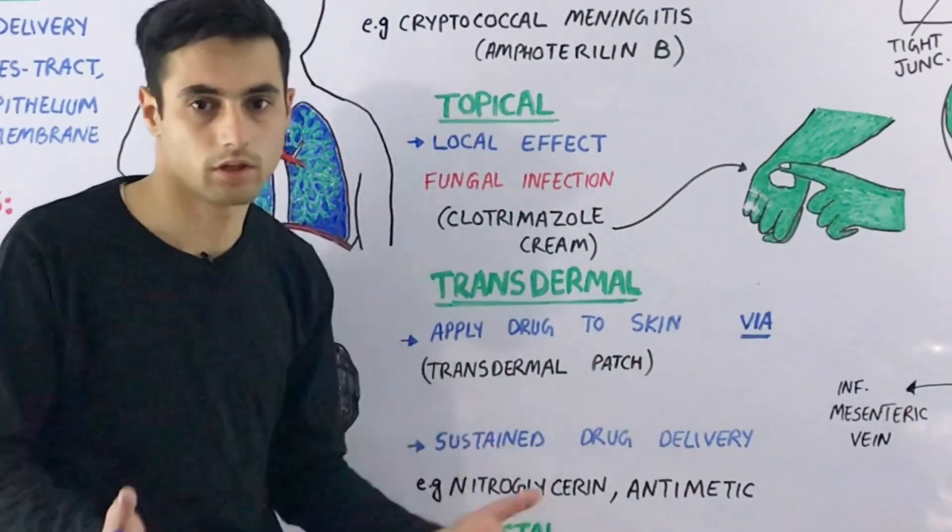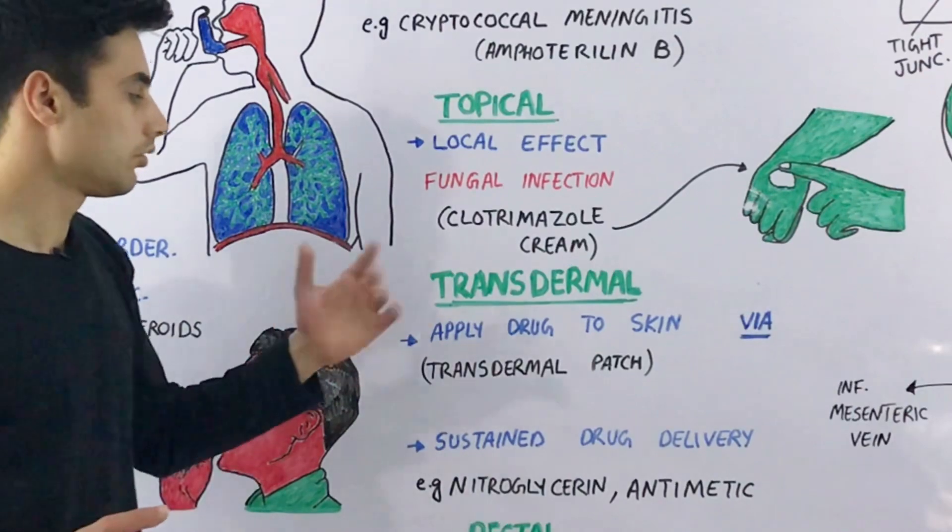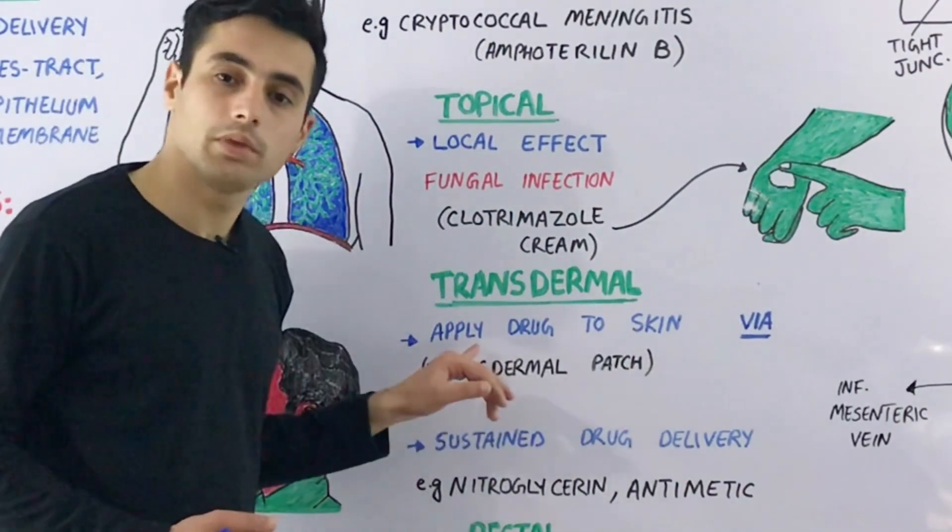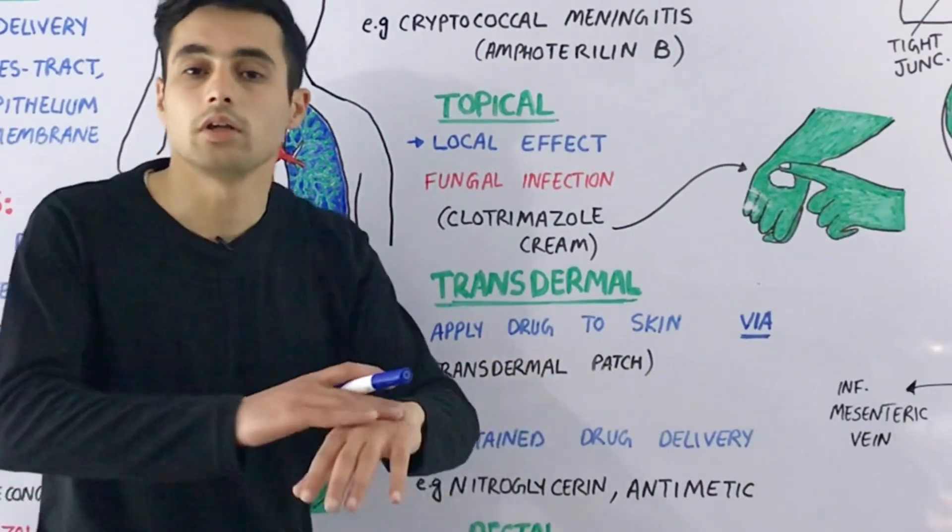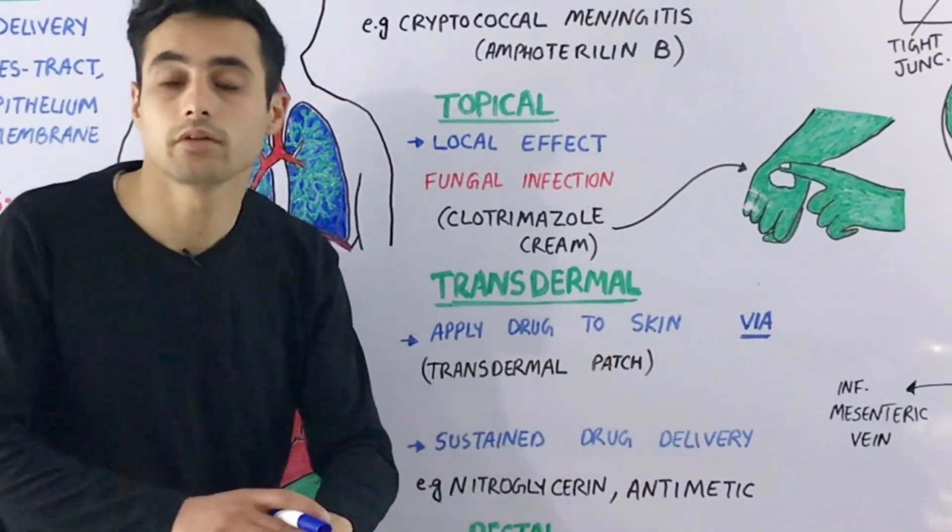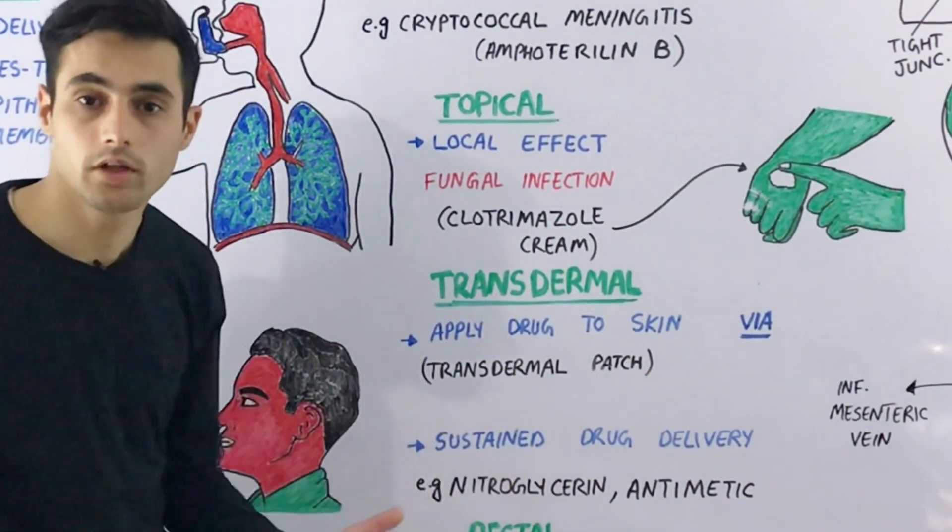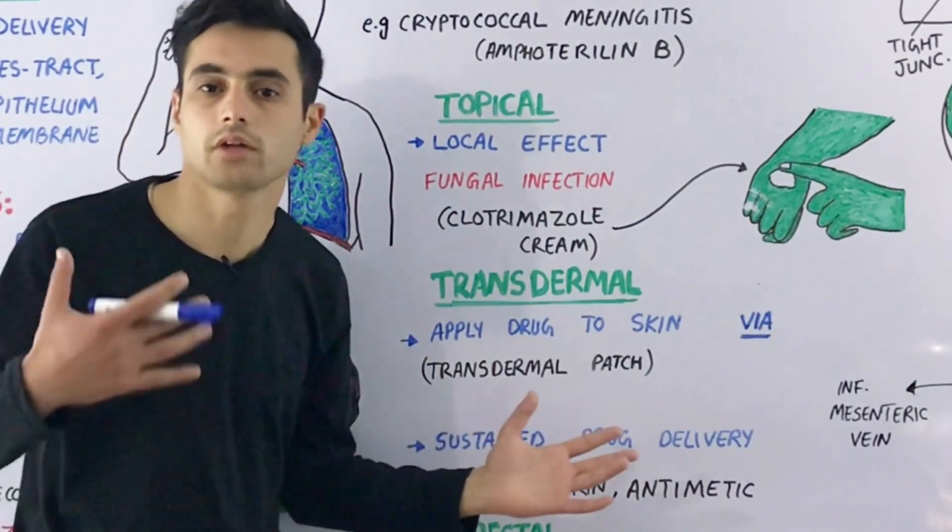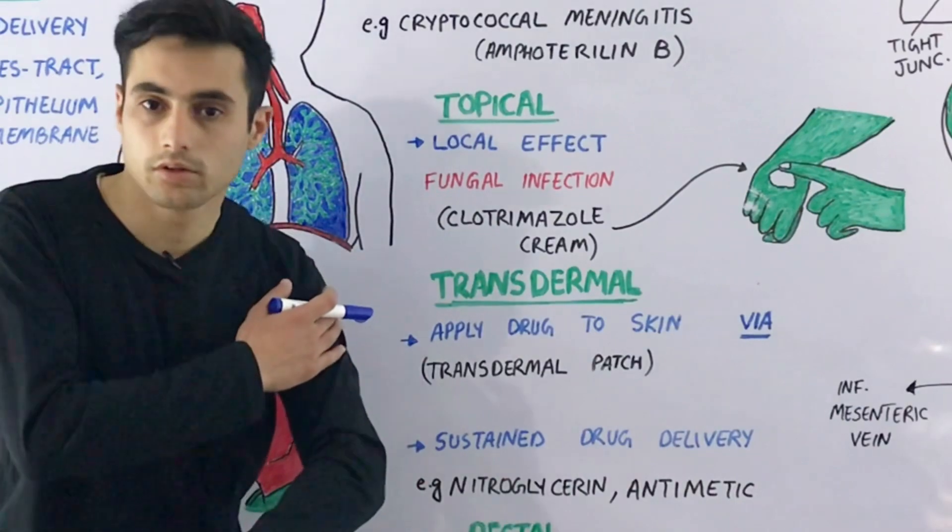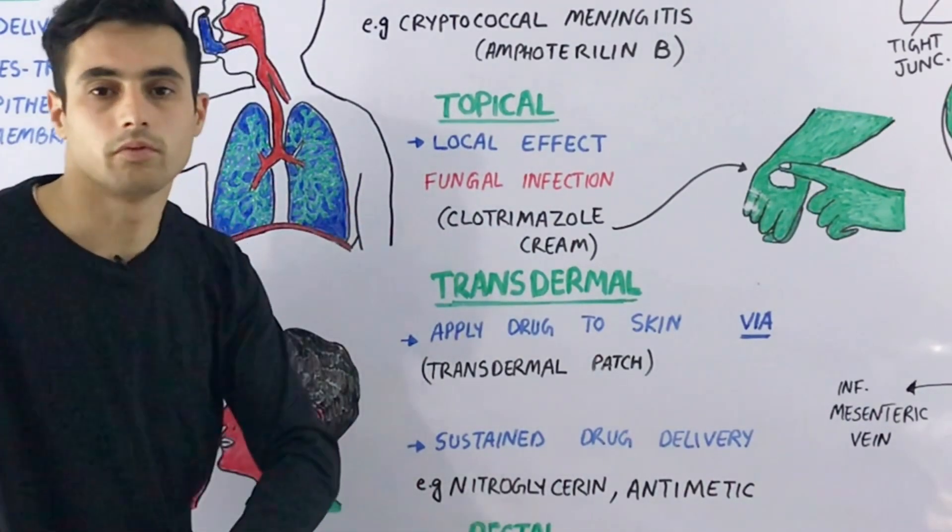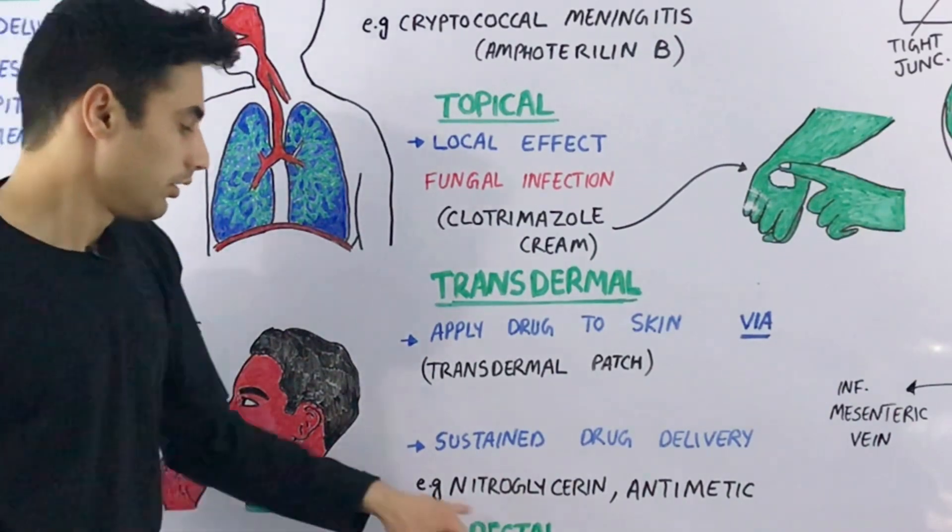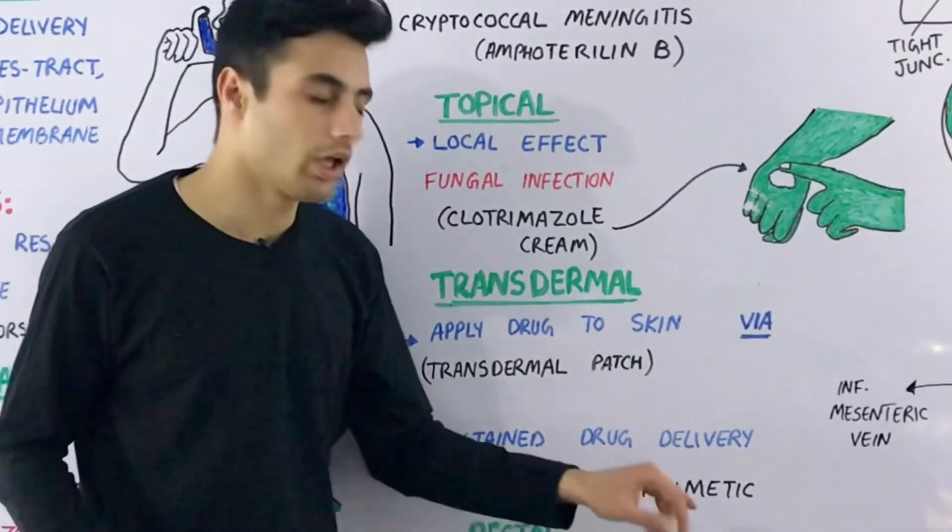The transdermal route is the application of a drug directly on the skin using a transdermal patch. The advantage of this transdermal route is sustained drug delivery - slow but sustained delivery into your systemic circulation. Examples include nitroglycerin and antiemetic drugs.